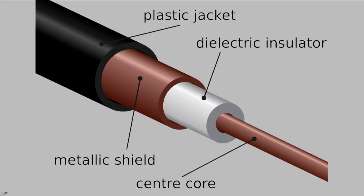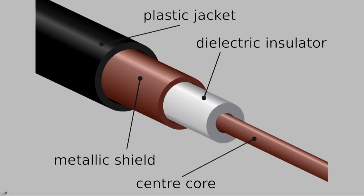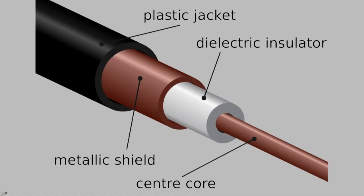What determines the impedance of this cable? It's basically the spacing between that center conductor and that metallic shield. For a given size of shield, you can vary the size of that center conductor, and that will change the impedance of the cable. The characteristic impedance is also affected by the dielectric insulator.